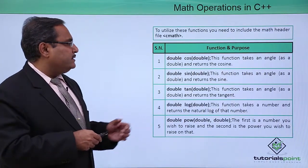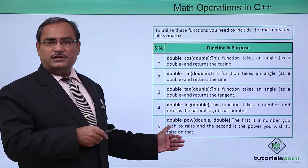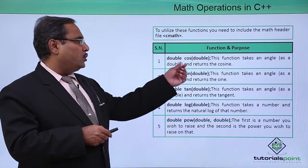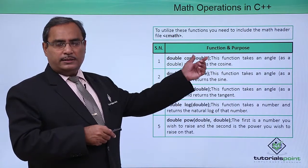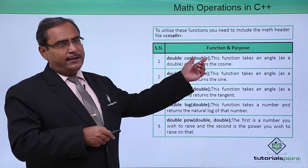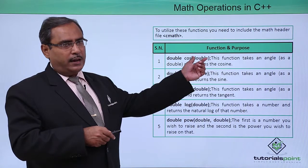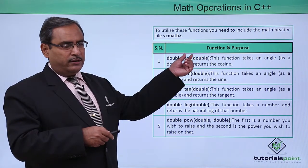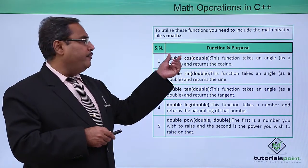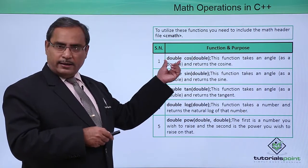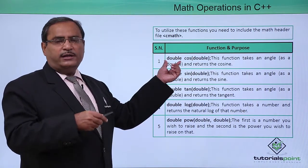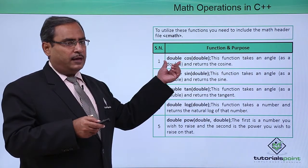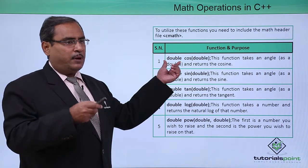Here are the functions. First, double cos(double) — this double is the angle expressed as a double. It will calculate the cosine of that angle and return the result in the data type of double.